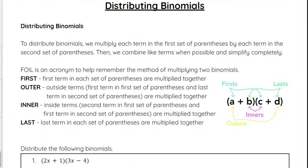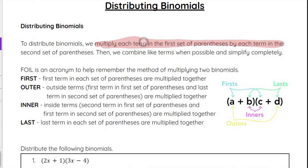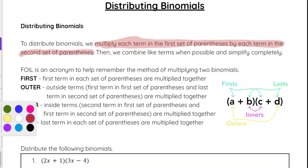Let's start off with a basic setup like we see down here in number one. To distribute binomials, we multiply each term in the first set of parentheses by each term in the second set of parentheses. That is the general pattern for multiplying any polynomials together, including two binomials.